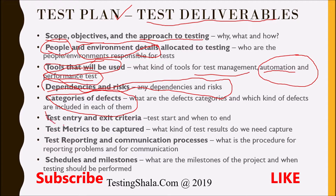The next item to track in the test plan is entry and exit criteria. This is very crucial — it clearly tells about when we are going to start the testing and when we are going to end the testing. Entry and exit criteria is applicable for every level of testing. For example, for unit testing, we will follow entry and exit criteria when entering and when completing unit testing.